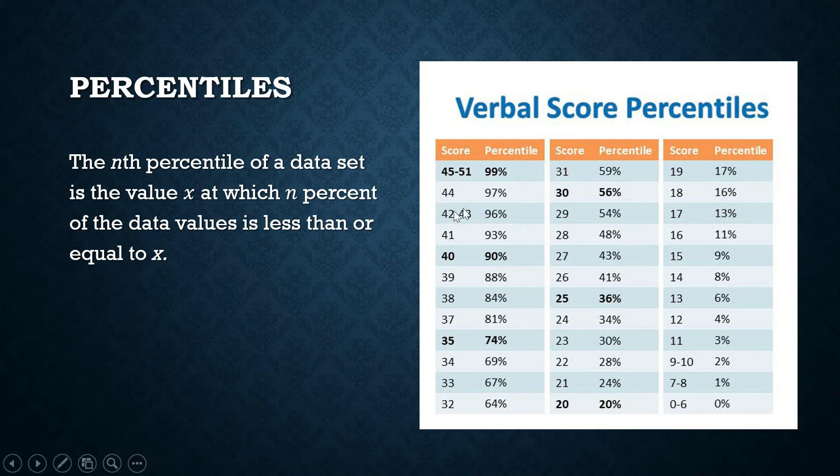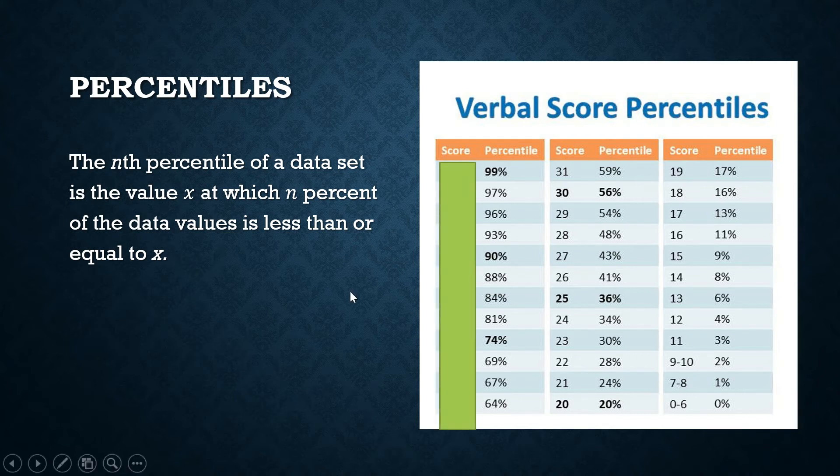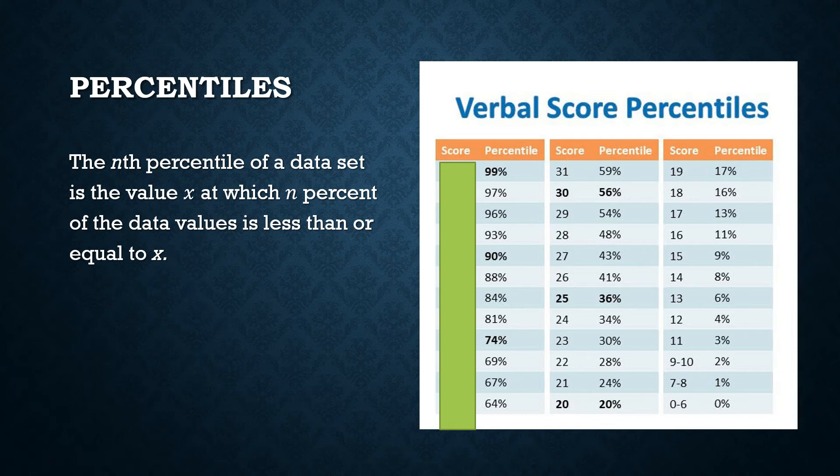If your percentile score is 97, that means you did better than 97% of the students who took the exam. Sometimes the actual scores are not shown. What is shown to you is your percentile rank or percentile score. Maybe you can still recall your NCAE. In my time, what we had was NCEE. I first heard about the percentile because of the results of my NCEE.